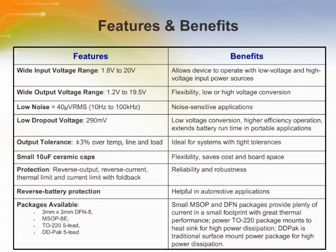Internal protection circuitry includes reverse battery, reverse current, reverse output, current limiting with foldback, and thermal limiting. For applications requiring large input-to-output differentials, the LT1965 offers a very compact and thermally effective solution. The IC features a wide breadth of packaging options ranging from modern high power density, small footprint, thermally efficient DFN and MSOP packages to more traditional D2PAK and TO-220 power packaging.